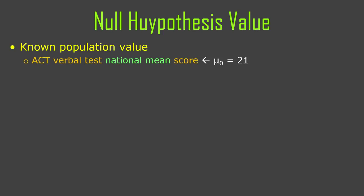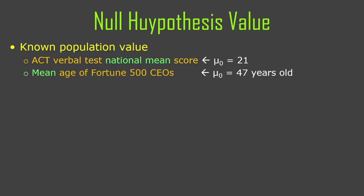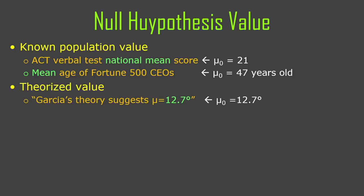So, a known population value: if we know the ACT verbal test national mean score is 21, then mu zero for our study is 21. Maybe our hypothesis is that our sample has a higher mean score than the national mean — we'd see if our sample mean was different enough to reject the null hypothesis. Or let's say you've got green energy companies, and you look at the age of their CEOs. You think the age of green energy company CEOs on average is lower than all Fortune 500 CEOs. So your mu zero would be the mean age of all Fortune 500 CEOs, and you do a hypothesis test to see if you could reject the null hypothesis.